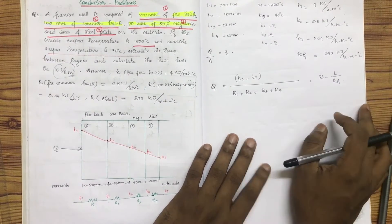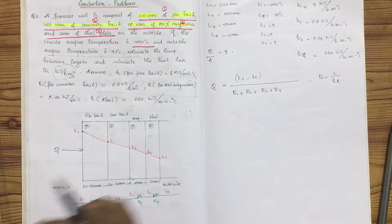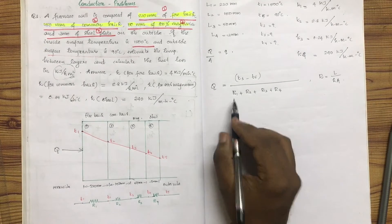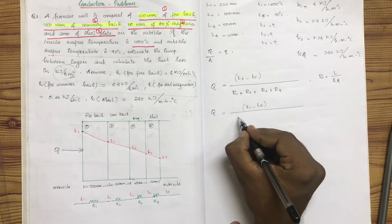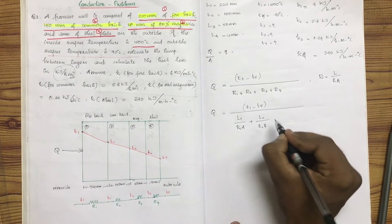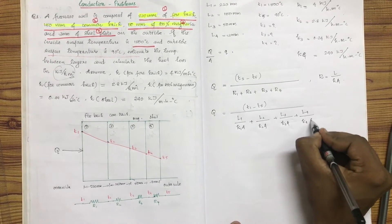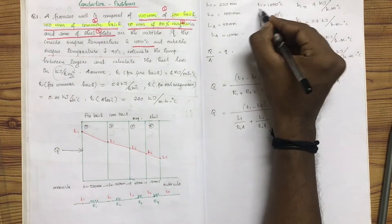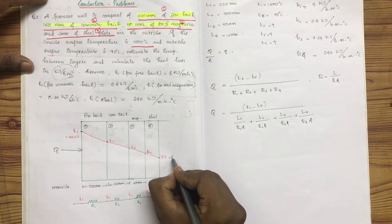R is equal to L divided by K. The formula for Q by A is equal to T1 minus T5 divided by L1/K1 plus L2/K2 plus L3/K3 plus L4/K4. T1 is equal to 1500°C and T5 is equal to 90°C.